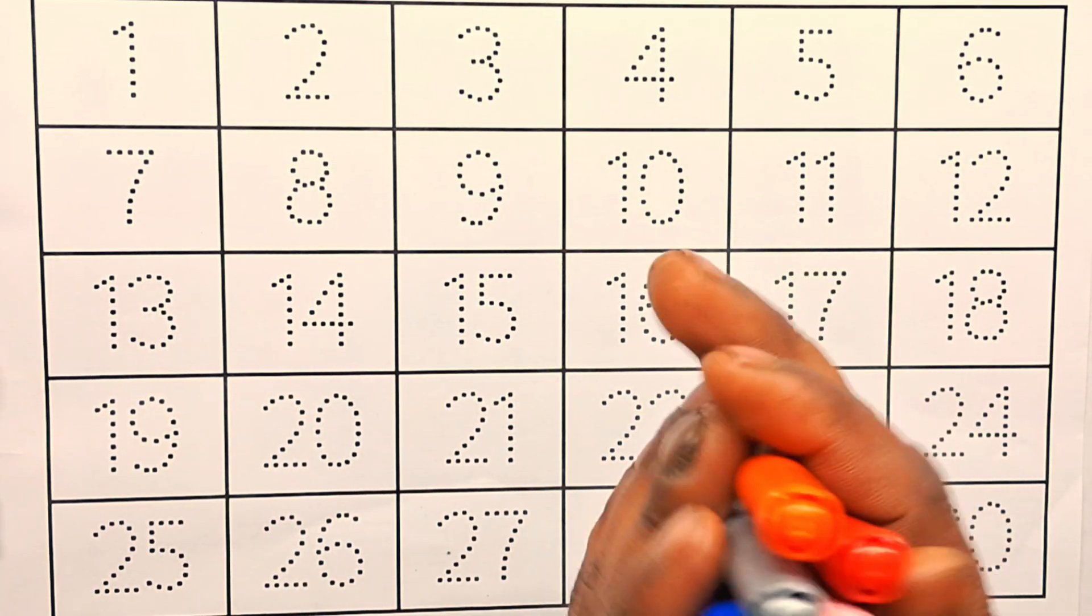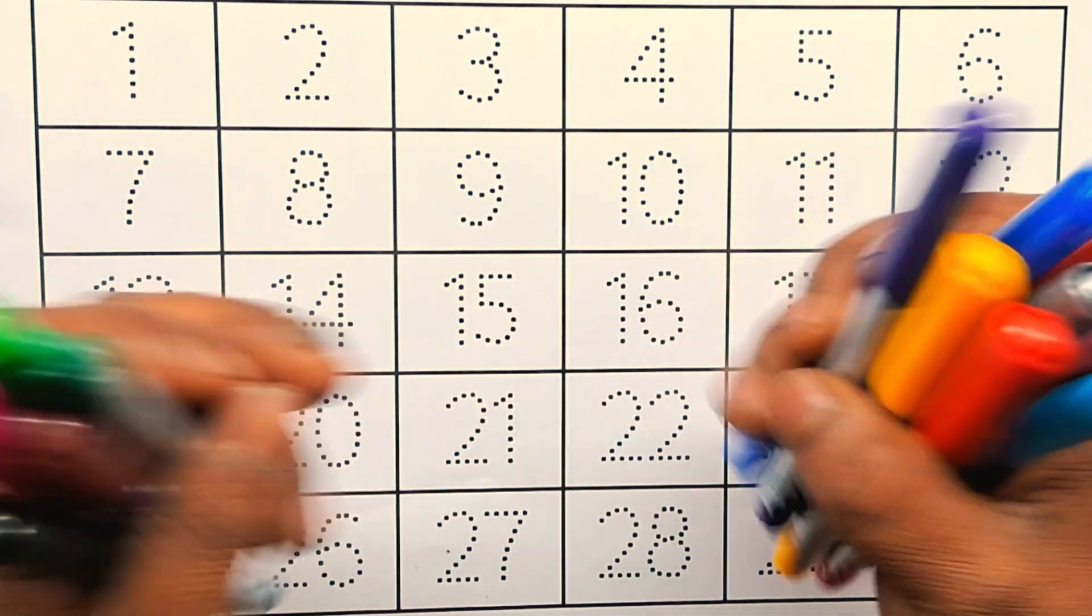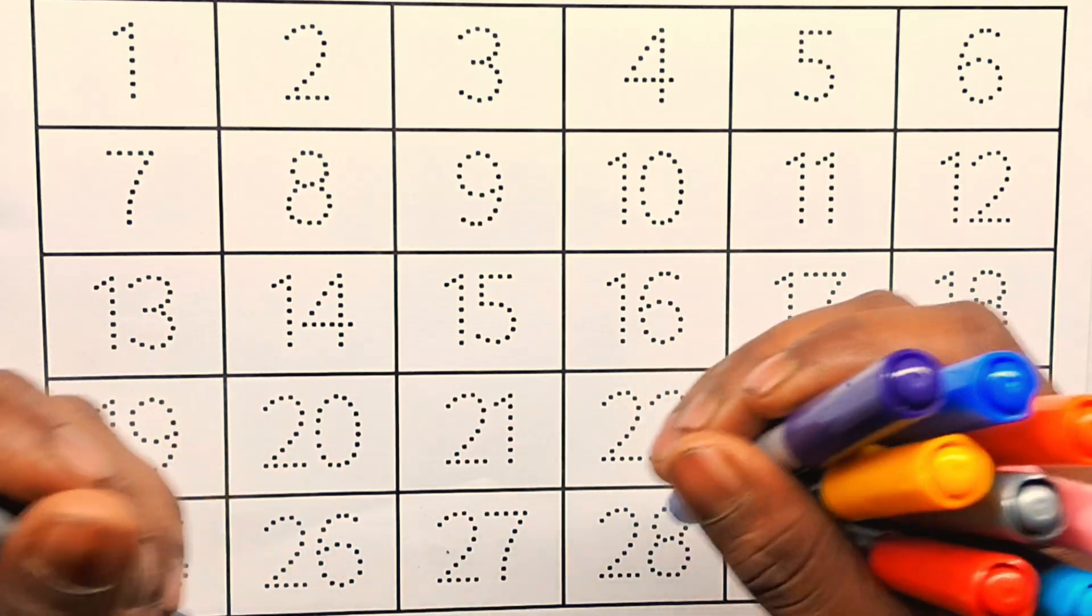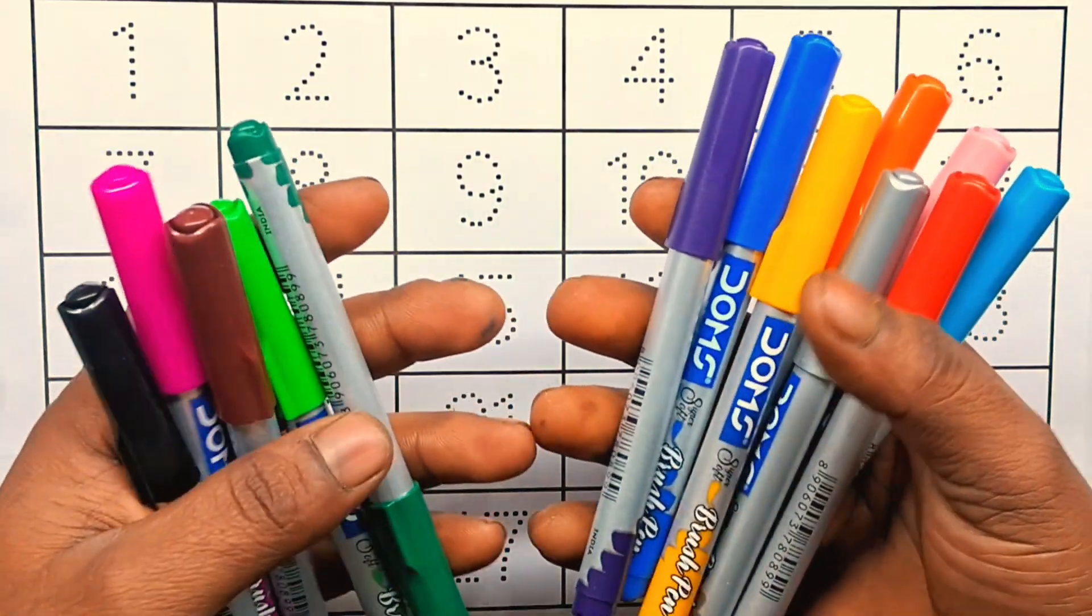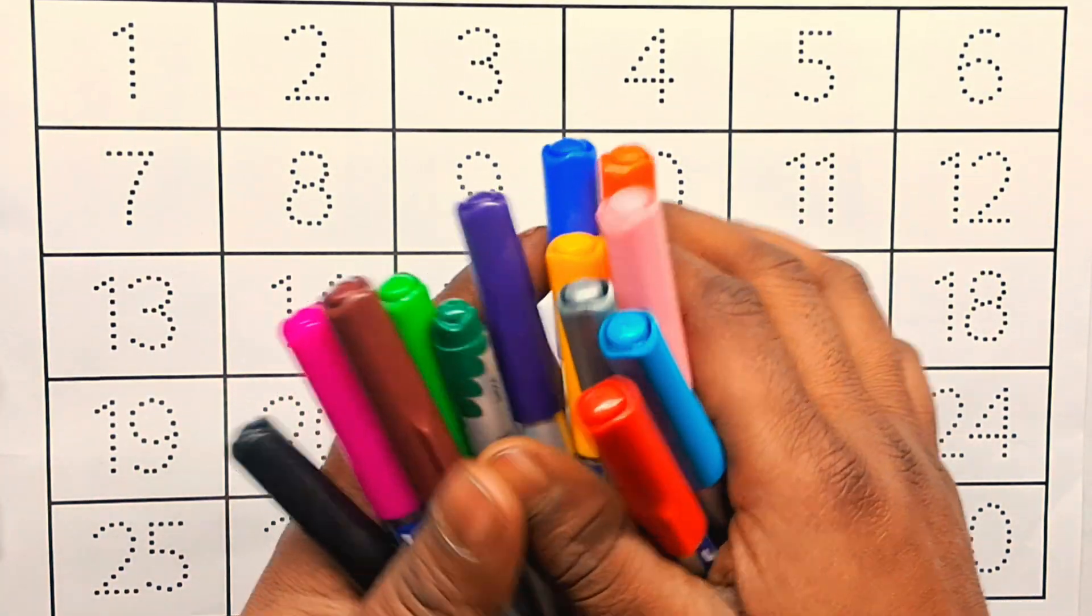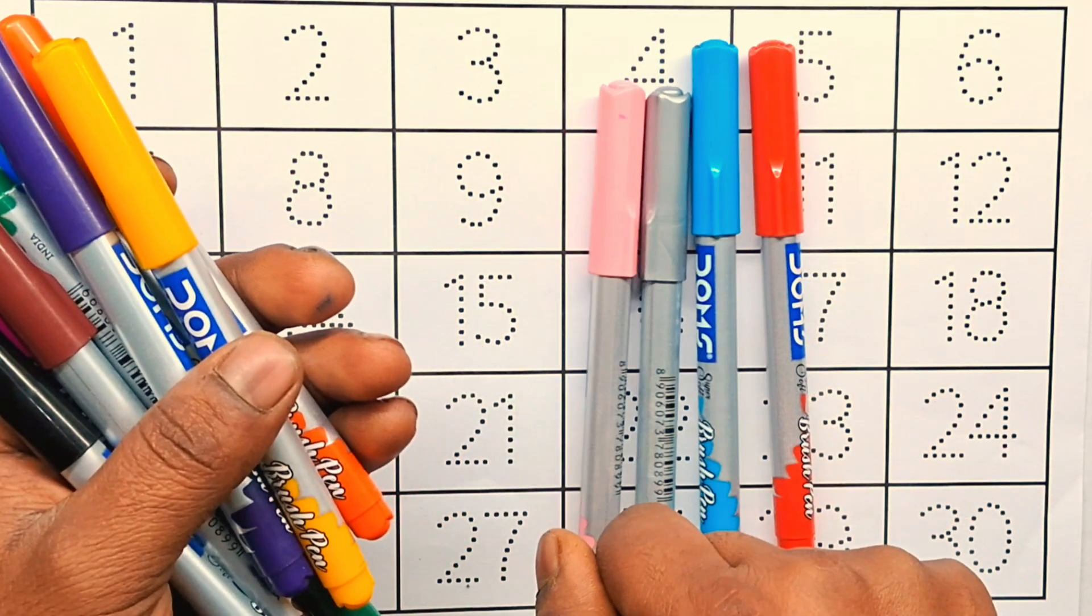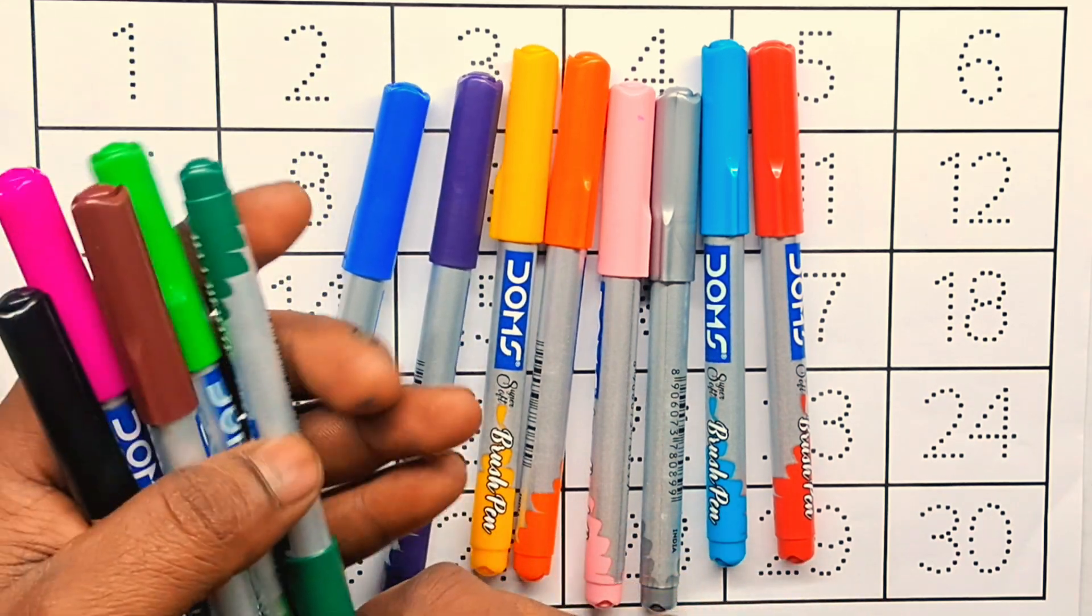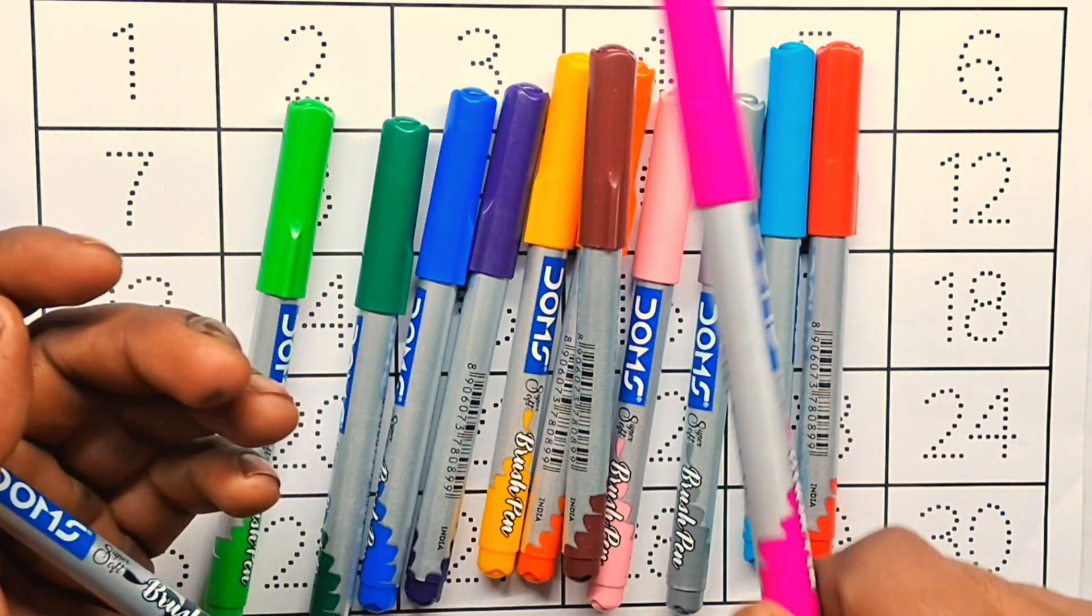Hello kids, let's learn counting numbers 1 to 30. We'll start with colorful counting numbers in different colors. First, the color names: red, sky blue, silver, light pink, orange, yellow, purple, blue, green, light green, brown, pink.